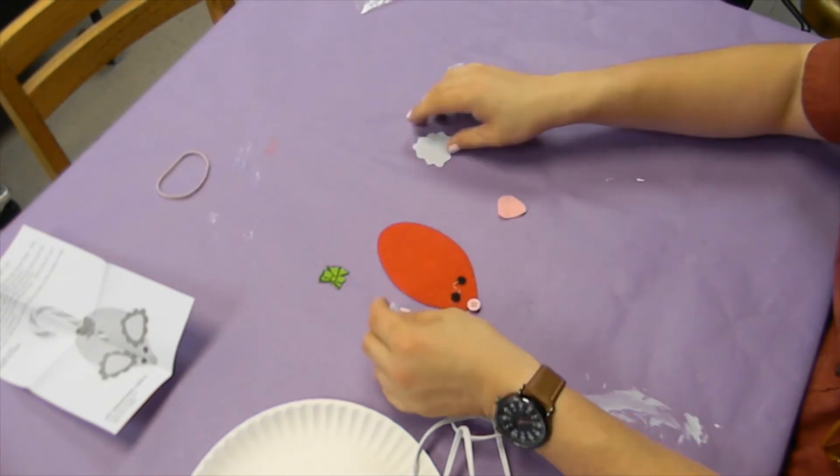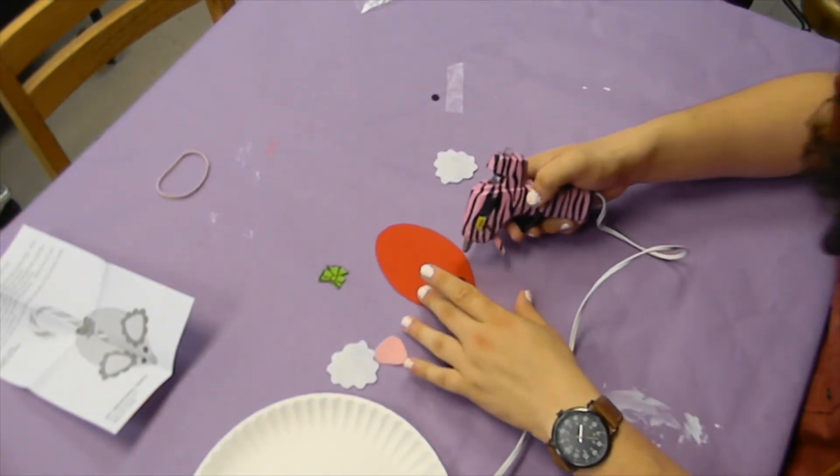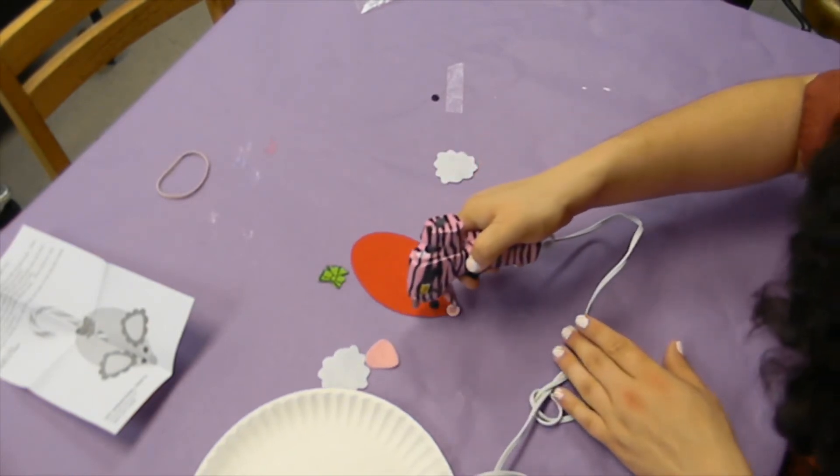Now, for the ears, you're going to put glue along the edge where you have it, so it will connect on the edge. And you're going to put glue onto the main body.